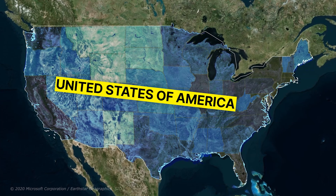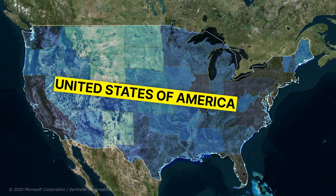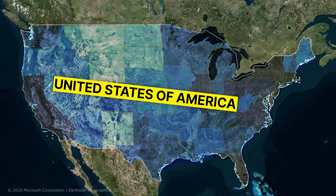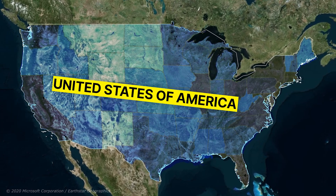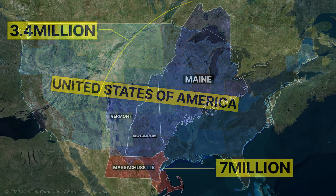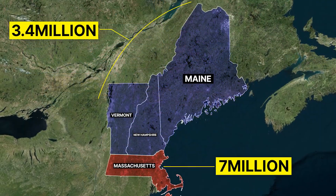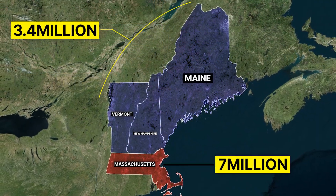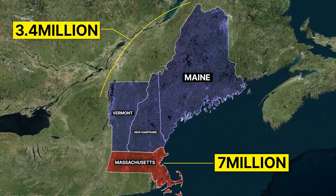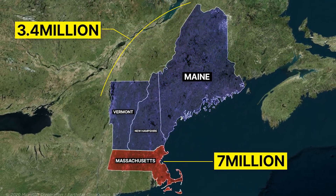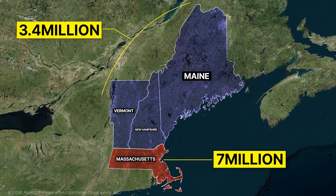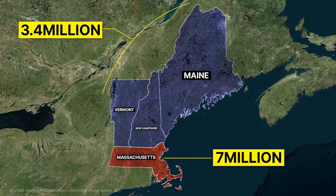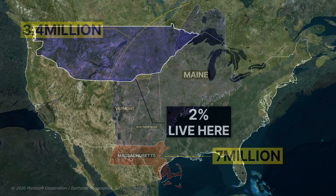When you look at the population map of the states of the United States, you see strange demographic divisions. For example, consider Massachusetts with 7 million inhabitants, which is twice the population of the 3 northern states.